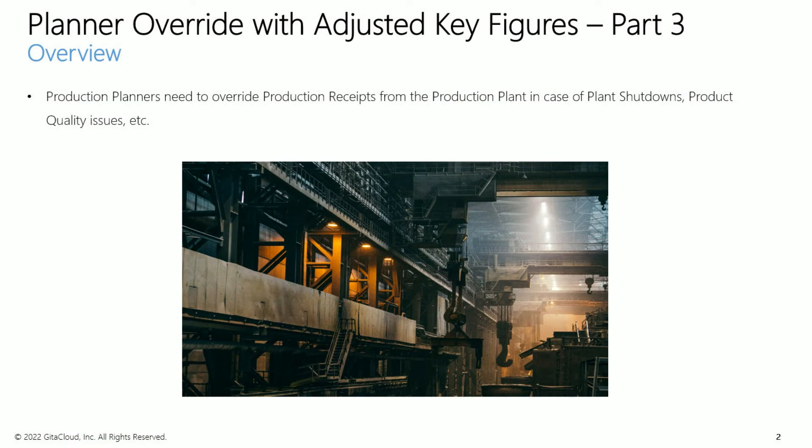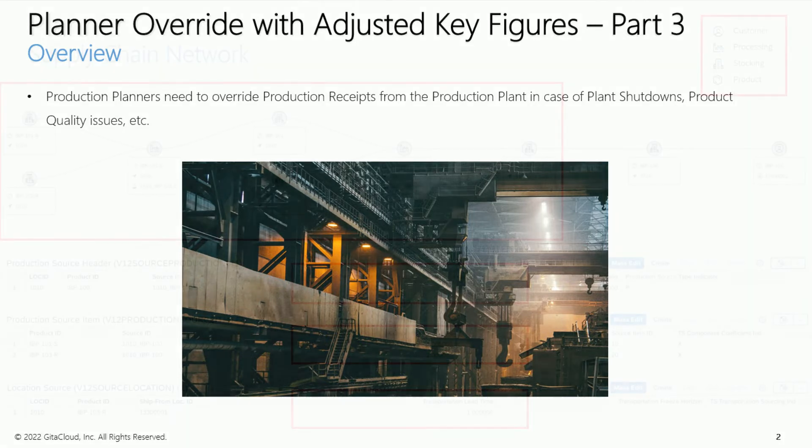Production planners need to be able to constrain and override production receipts from the production plant, irrespective of the downstream demand or theoretical capacity of the plant. This may be due to asset availability issues due to scheduled downtime, COVID-related plant shutdowns, quality issues, or regulatory issues blocking production of certain products in the plant.